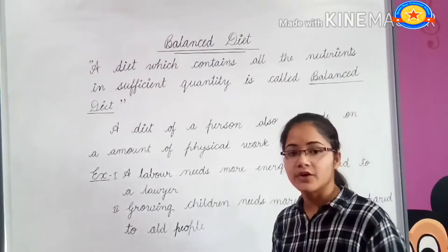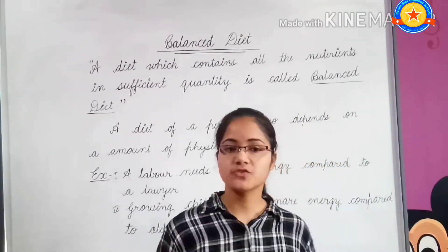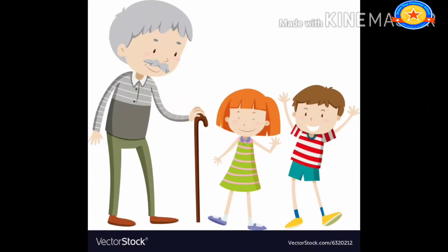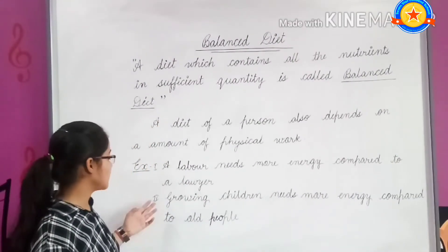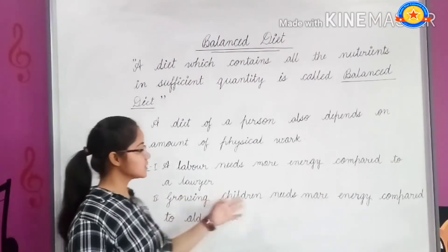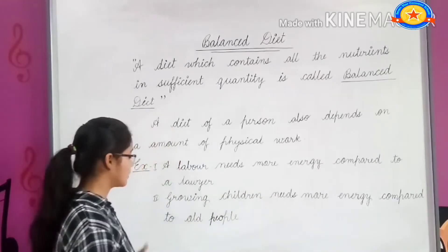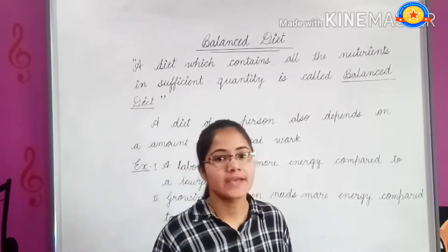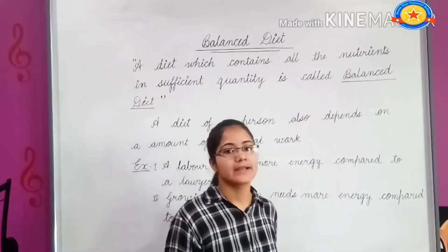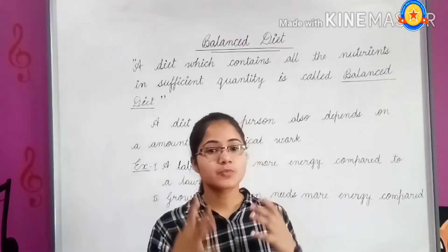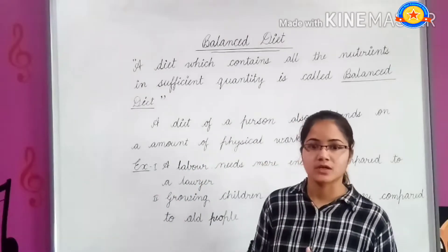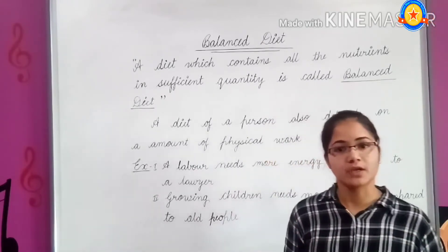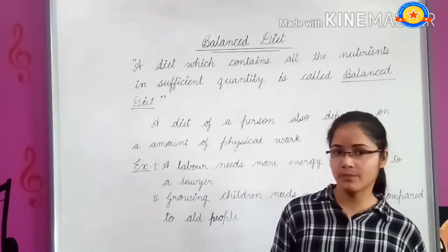The definition of a balanced diet also changes with age. Growing children need more energy compared to old people. At the growing age, children require a diet rich in protein and carbohydrate, while old people need a diet rich in vitamins, minerals, and dietary fibers.